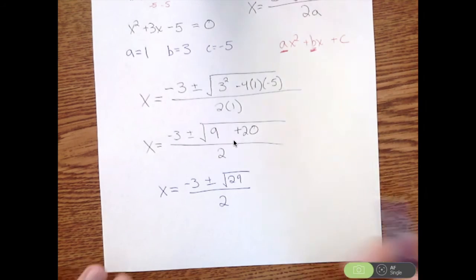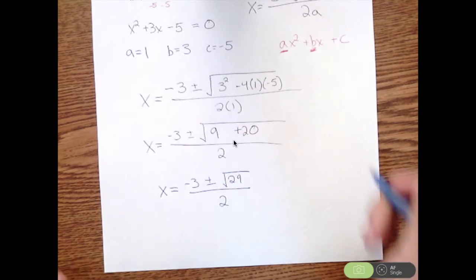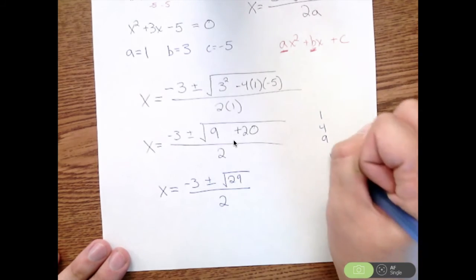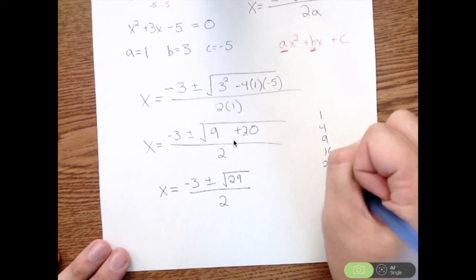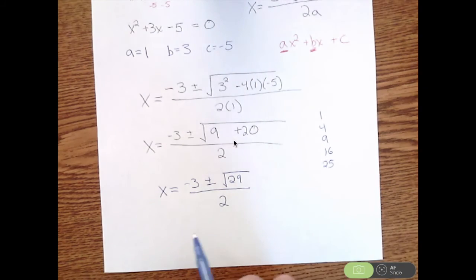Now what I would like to do is simplify this radical if possible. So I'm looking for, is there any numbers that I can take the square root of that go into 29? Numbers I can take the square root of are like 1, 4, 9, 16, 25. So I look and see, can I divide any of these into 29? What you'll find is I cannot do that, so I cannot simplify the radical.